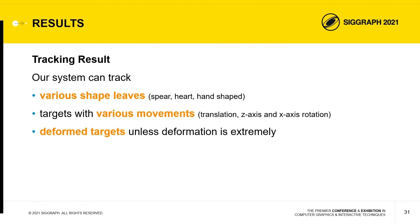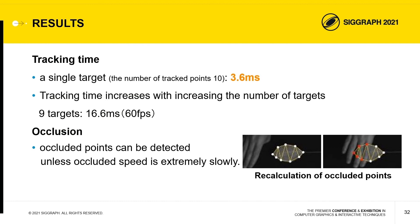These results showed that our system can track various shape leaves with various movements. Additionally, deformed targets can also be tracked unless the deformation is extreme. Regarding tracking time, the system can track a single target with 10 points in 3.6 ms. Although tracking time increases with increasing numbers of targets, the system can track 9 targets in 16.6 ms, achieving 60 FPS. Regarding occlusion detection, the occluded points can be detected unless targets are occluded extremely slowly, since the system detects occluded points on the assumption that the brightness of the occlusion area largely changes.